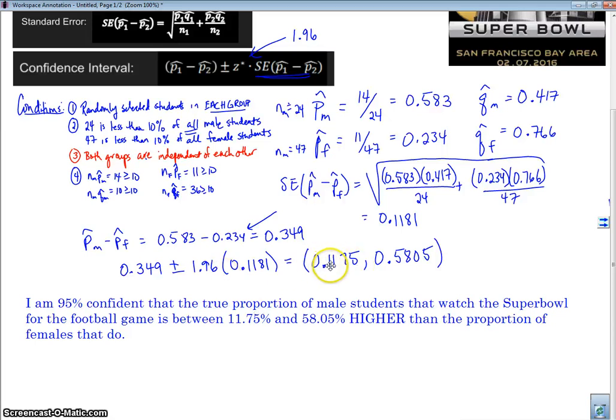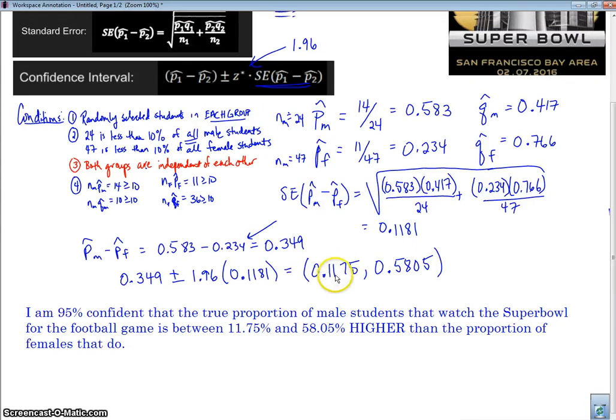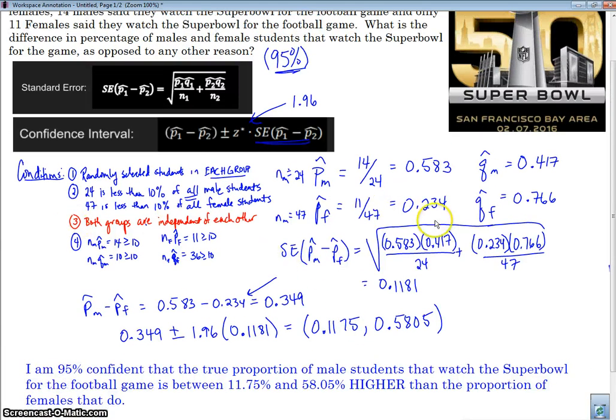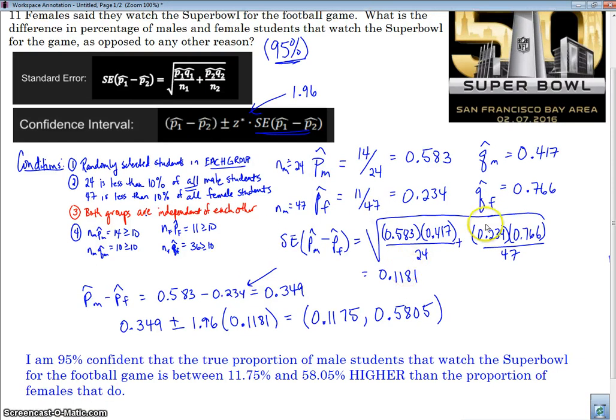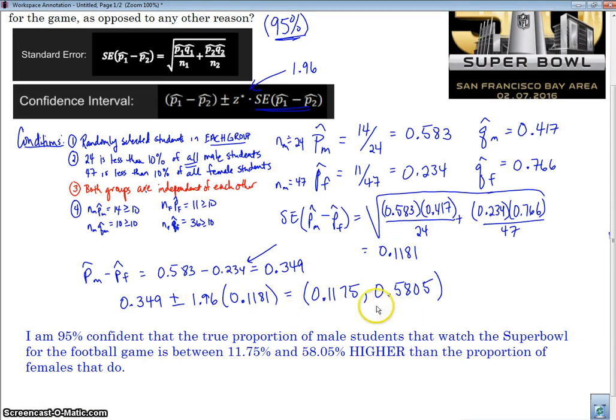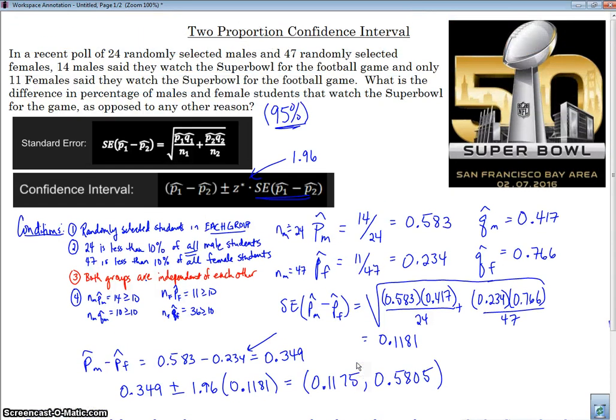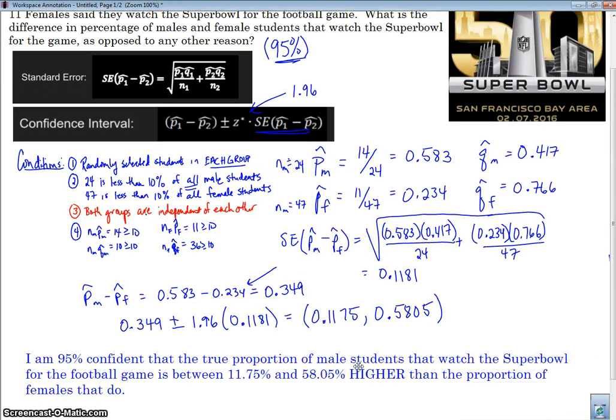So I'm 95% confident that the true proportion of male students that watch Super Bowl for the football game is somewhere between 11% higher and 58% higher than the proportion of females that do. If I would have had a negative here, then that would have meant that the proportion of males was lower than the proportion of females by that percent. So here is a full confidence interval from start to finish, finding my conditions, labeling all the things that I need, doing some math here, and then finally finding my confidence interval and putting it in context. If you're my student, tomorrow we'll come in class and we'll practice a few more of these and you'll get a chance to practice. So make sure you have this written down so you're able to come back and look at the specific work that we did. All right, we'll talk to you soon and those of you, my students, we'll see you tomorrow. Bye-bye.